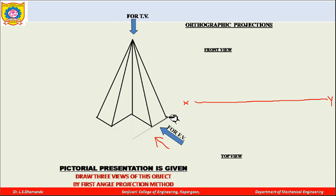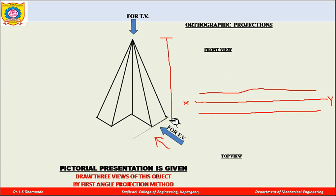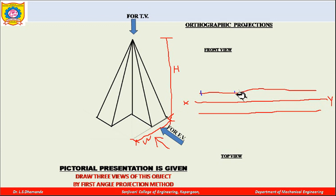If you observe this object you will find there is one line here at this particular point and this base point. When you are looking from this side you will get a vertical line here. Drawing one line above the XY line by some distance and below the XY line at the same distance, we can draw the front view. We need to find out first the height of this object and the width, and by knowing height and width we can draw the front view.